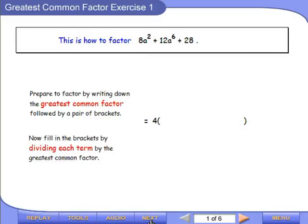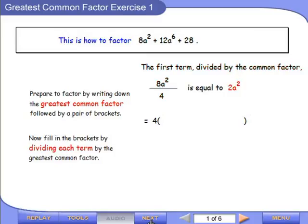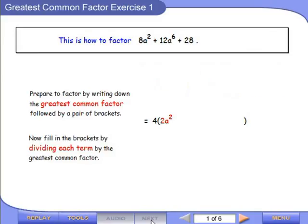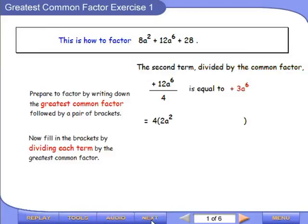Now it says fill in the brackets by dividing each term by the greatest common factor. We take the first term, divide by the greatest common factor, get the answer and put it in the brackets. Second term, divide by the greatest common factor and put it in the brackets, as well as the third one.